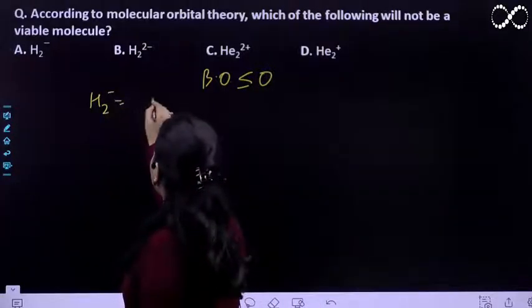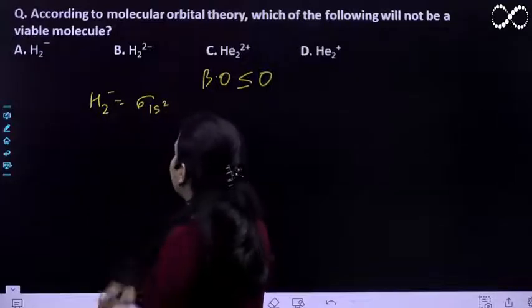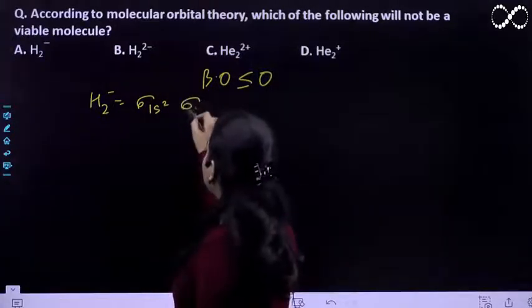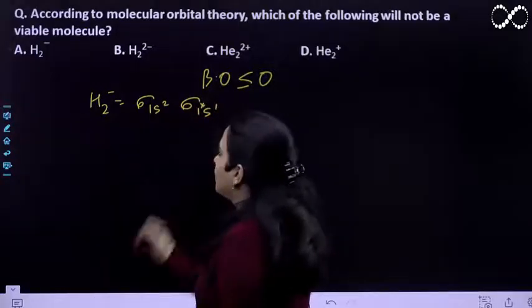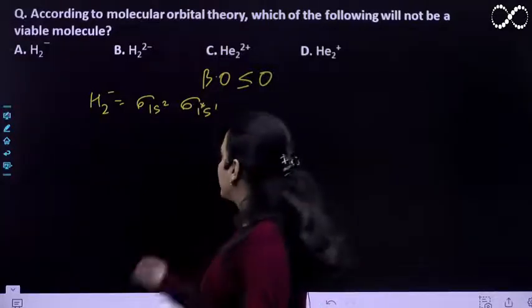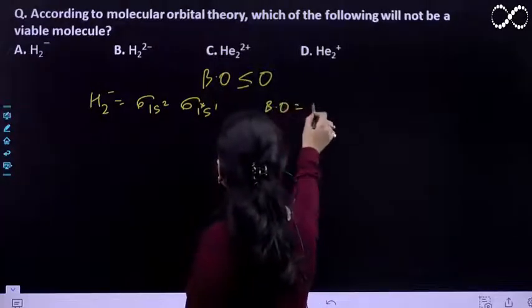Now H2 negative ka, agar hum configuration likhte hain, ye hota hai sigma. Total number of electrons is 3. Sigma 1s is 2, sigma star 1s is 1. Bonding mein 2 electrons, anti-bonding mein 1 electron. The bond order is 0.5.